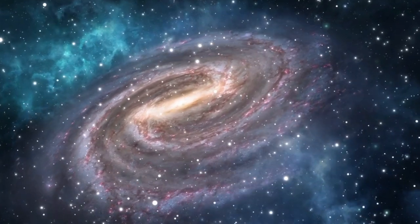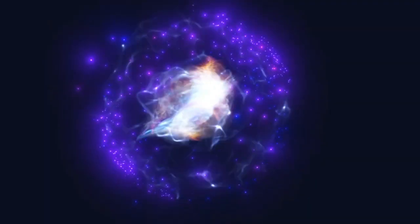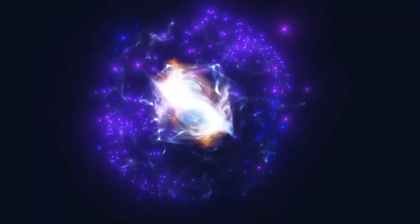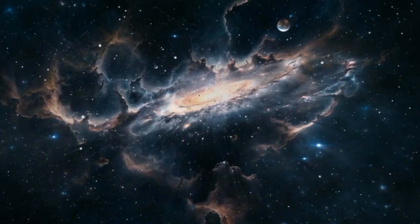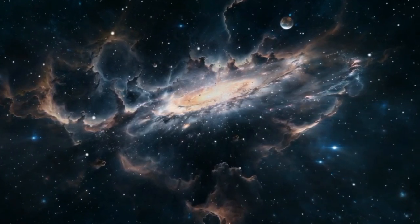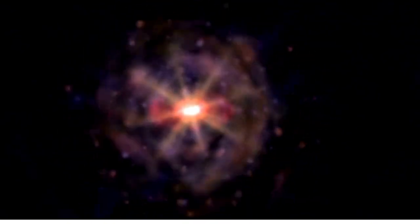In recent years, astronomers have identified thousands of exoplanets orbiting distant stars. Many are in the habitable zone, where conditions could allow liquid water and possibly life. Some are gas giants or icy worlds with subsurface oceans, while others are Earth-like in size and composition.